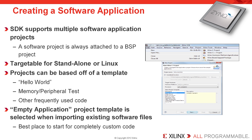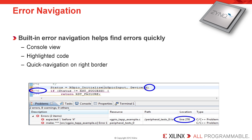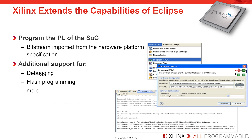Creating a software application is very straightforward. SDK supports multiple software application projects, and they are targetable for either standalone or Linux. There are a number of templates provided, the simplest being Hello World, which is great for just seeing if an application and a board comes up properly. There are more involved memory and peripheral tests, and other frequently used code snippets. The empty application project template is typically selected when importing existing software files. There's built-in error navigation — every time the file is saved, it is run through the compiler and any errors are flagged. There's also support extended by Xilinx for Eclipse to program the programmable logic portion of the SoC, with additional support for debugging, flash programming, and many other capabilities.